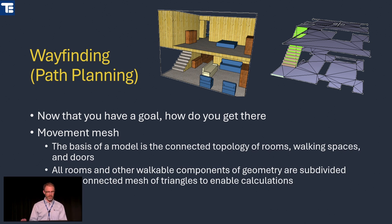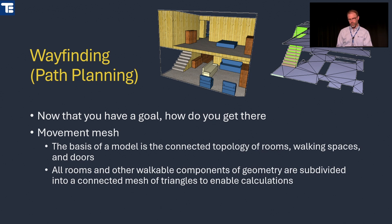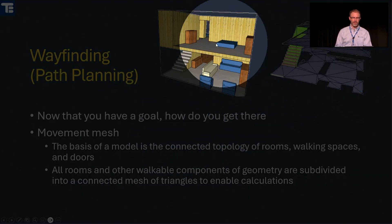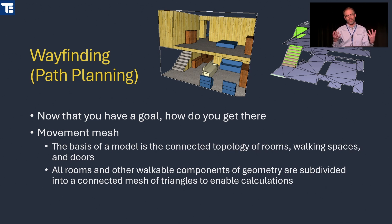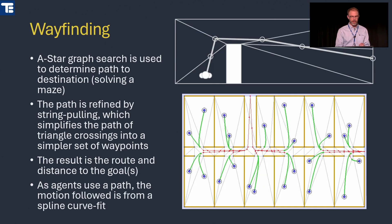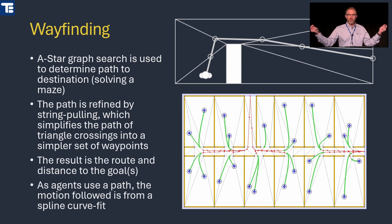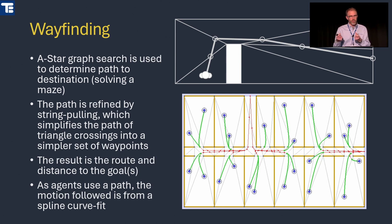Once a goal is selected, you need wayfinding to get there. Pathfinder models use a movement mesh — whatever you've defined as rooms, stairs, and doors is converted into a set of connected triangles, forming a graph. We search that graph using an A-star algorithm — essentially a maze-solving problem — to find ways between points A and B. The algorithm returns all paths to the exit, you pick the shortest, then those are refined to remove extra points and simplify the path.